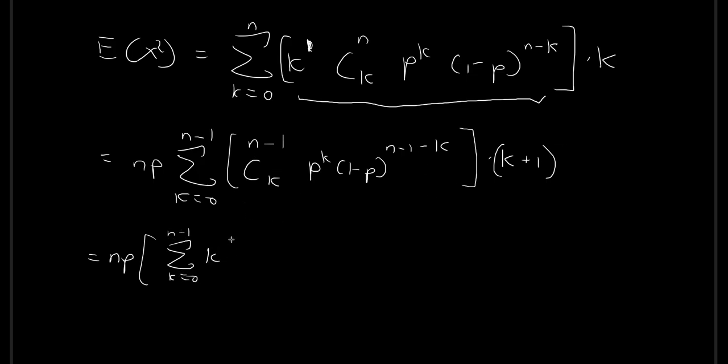Let's just distribute the k plus 1 to this entire term. So first we have k times this term over here. And then we also have another term, so plus 1.